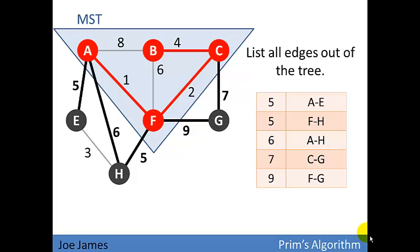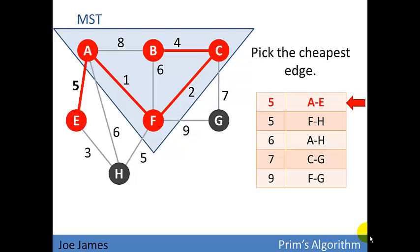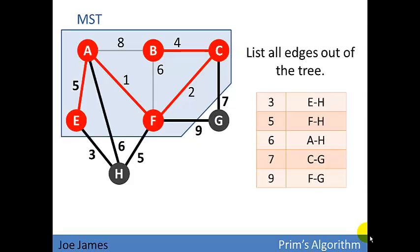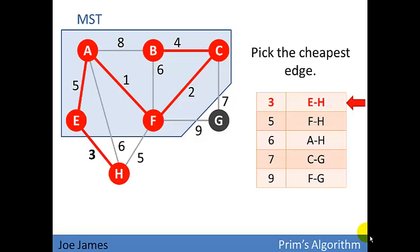Now there are two different edges that both cost five. We can choose either one. It's not going to make a difference. They both will give us the minimum spanning tree, although a slightly different minimum spanning tree will be at the same total cost. So in my algorithm, I always choose the first one alphabetically, which is AE. So we're going to pick that. We redraw the tree perimeter. We list out all the edges out of the tree. And we pick the cheapest, which is edge three going to vertex H.